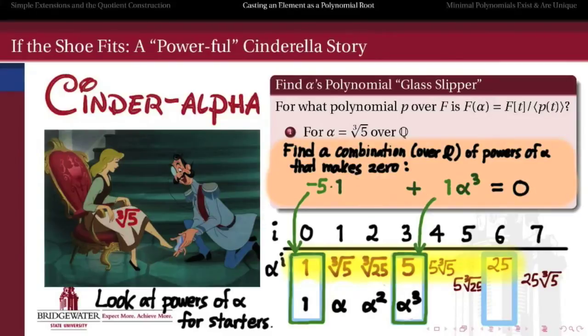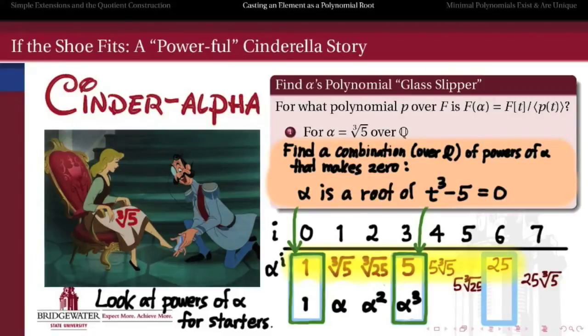But on the other hand, it's the same thing as negative 5 times 1 plus 1 times alpha cubed. And so naturally we have found a polynomial, t cubed minus 5, of which alpha is a root. It's going to turn out that this is irreducible. After all, it's Eisenstein with prime 5. But at this point we don't even care about that. We just want to find any polynomial that fits the Cinder-alpha cube root of 5. So there's a polynomial that works for the real cubed root of 5.